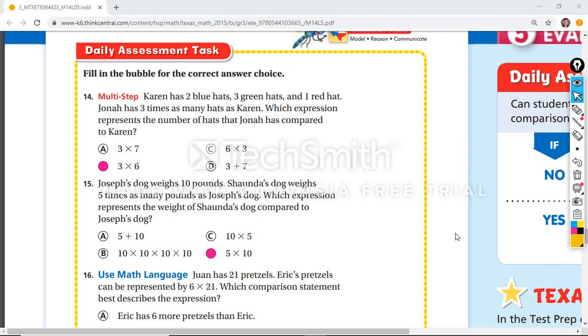We're looking at 14.5 multiplication comparison, and let's take a look at what we have here so far.